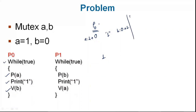Now process P1 runs. What does P1 do? P1 does P(B) and V(A). V(B)'s value was 1; P(B) makes it 1 to 0. Then it prints 0.